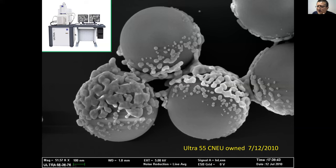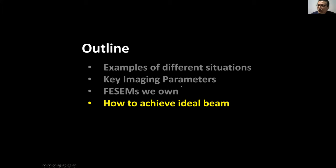This SEM is owned by CNEU. CNEU has a very good SEM — I took this picture more than 10 years ago using the Ultra 55, which did a very good job at that time. To summarize: when imaging your sample you need to make sure the voltage is right, the aperture is right, the beam current is right, and the working distance is right.